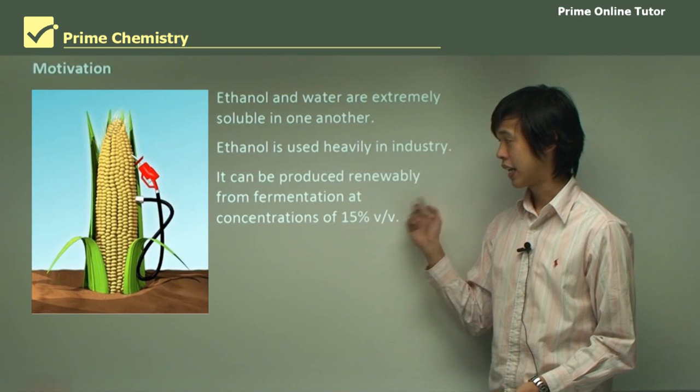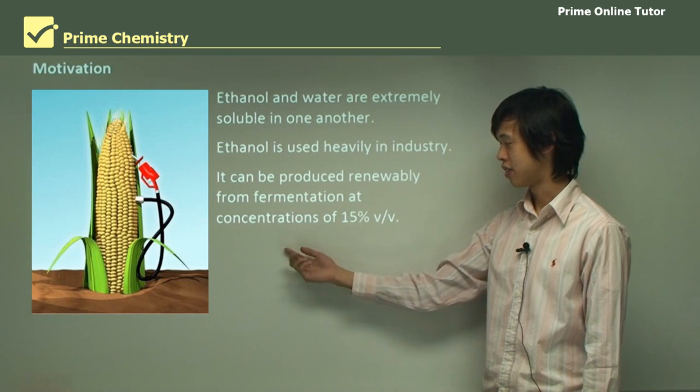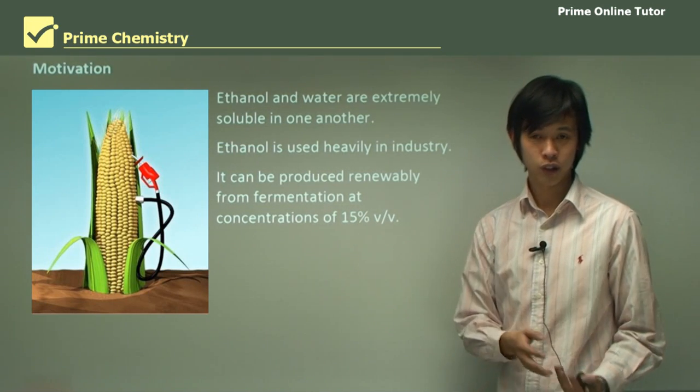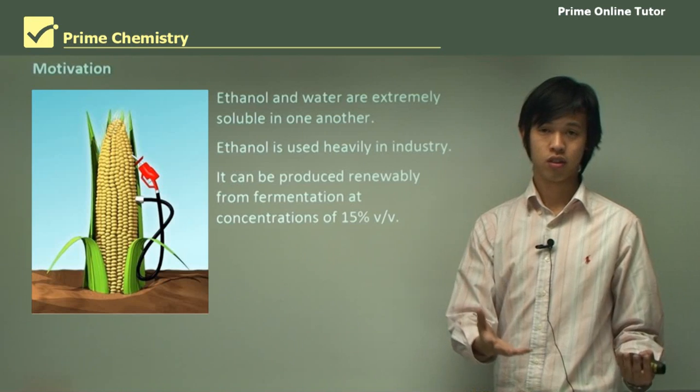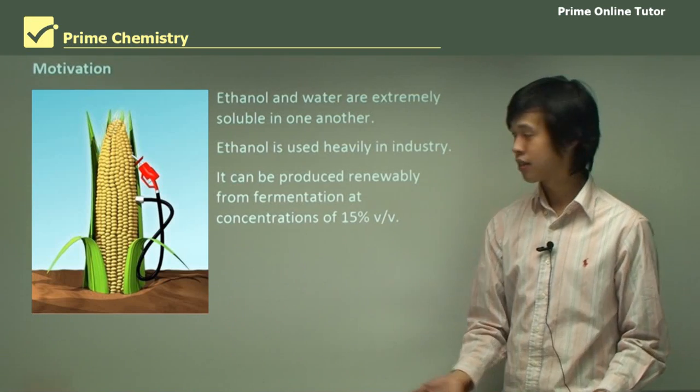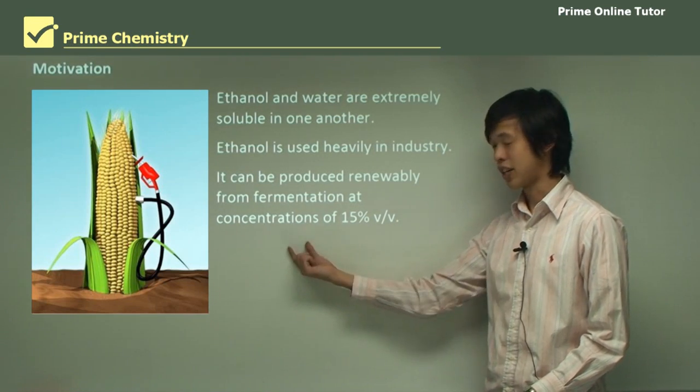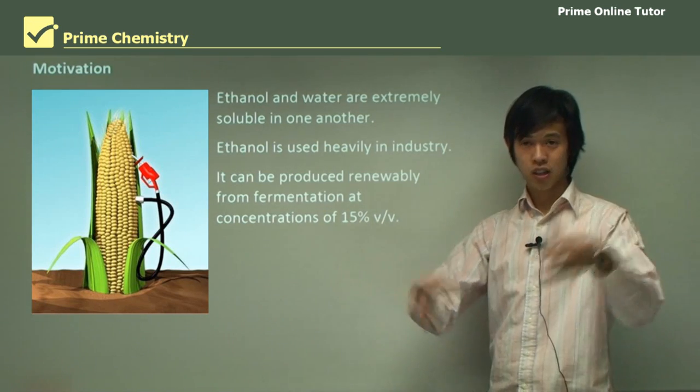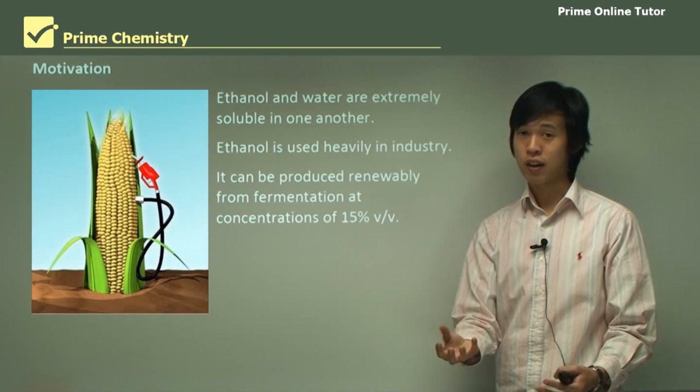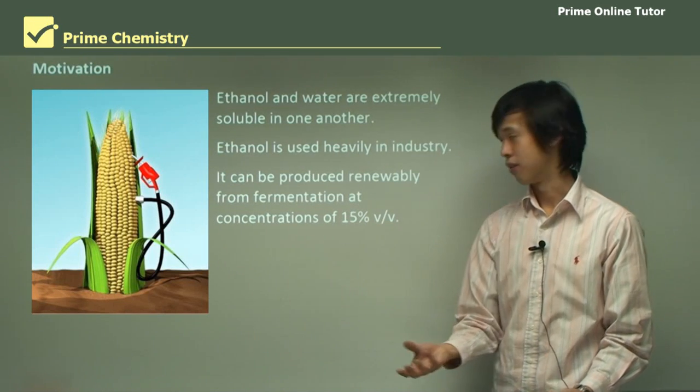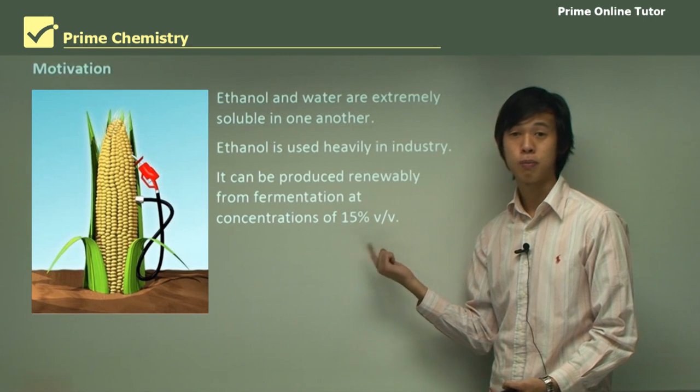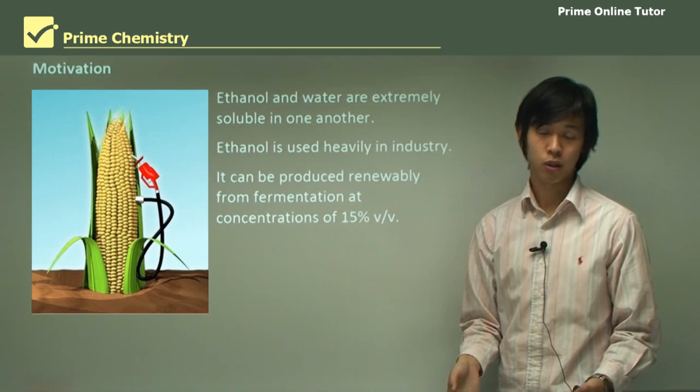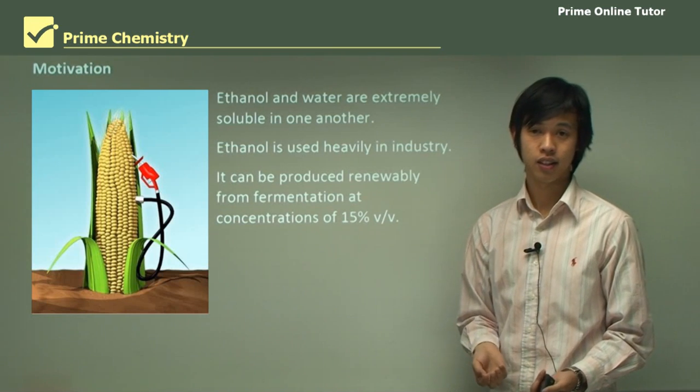Now it can be produced renewably from fermentation at concentrations of 15% v/v. So if we want renewable ethanol for fuel, for plastic, for perfume or solvents, we can only get 15% concentration in any particular system. So when we put our sugar and our yeast in a big container, only 15% of that will be ethanol when you're done. That's what v/v means, volume per volume.